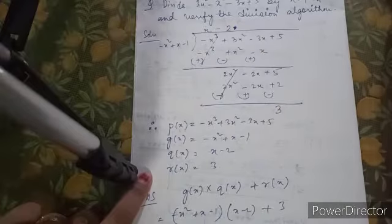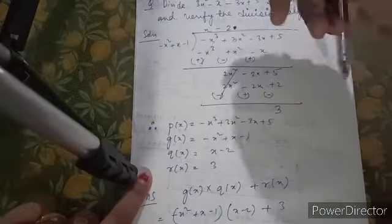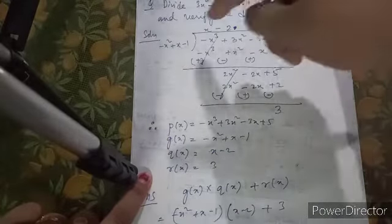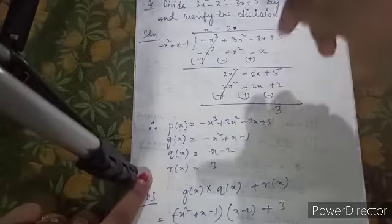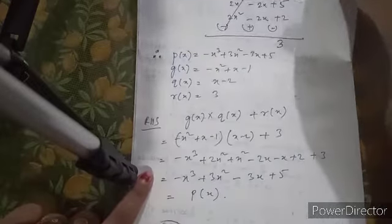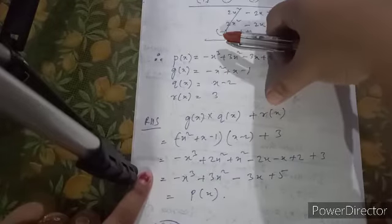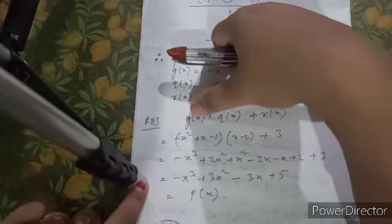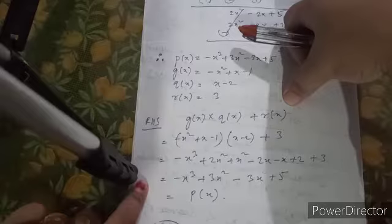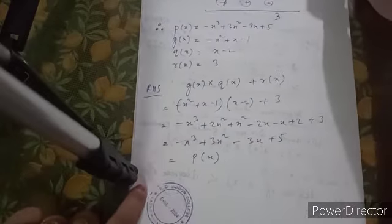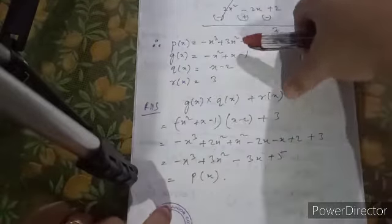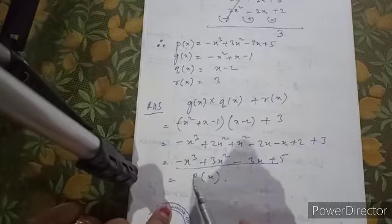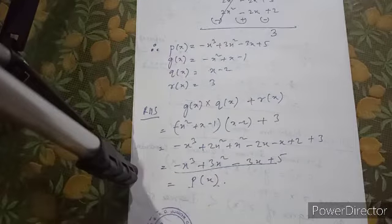Here you are getting your remainder as 3. That means this is the dividend, this is your divisor, this is quotient, and this is remainder. Now to verify, we multiply G(x) times Q(x) and add the remainder R(x). When you calculate this, you get the value of your original P(x).